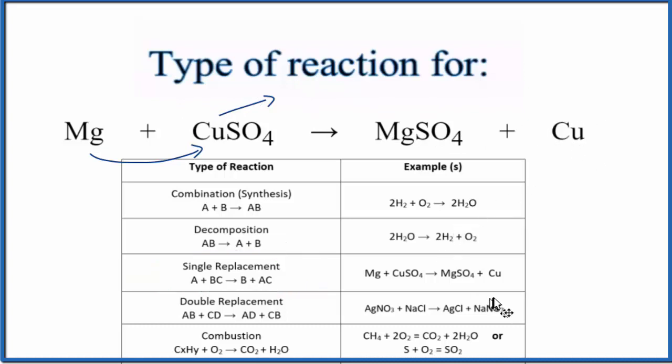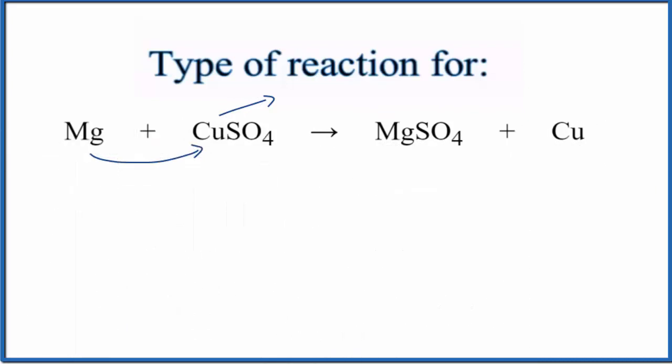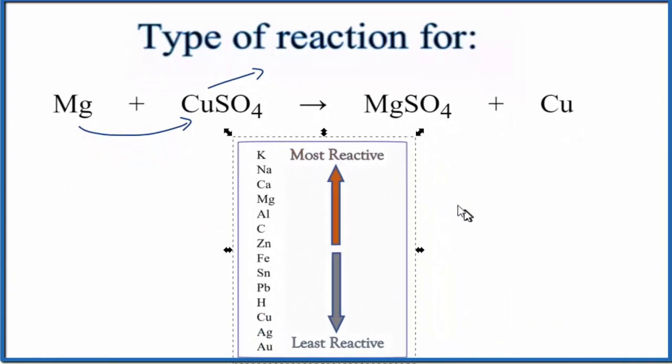Single replacement. We can tell if a single replacement reaction is going to take place using the activity series here. When I look at the activity series, I go down, I'm looking at magnesium, and then copper is way down here. As we go up, these elements are more reactive. Since magnesium is more reactive, it can push the copper out and bond with the sulfate. So we get magnesium sulfate.